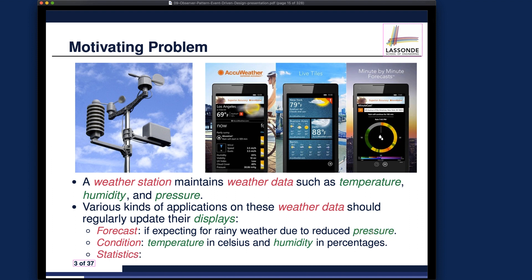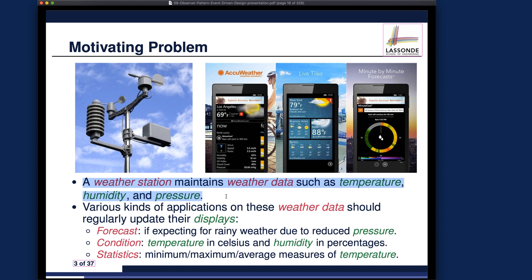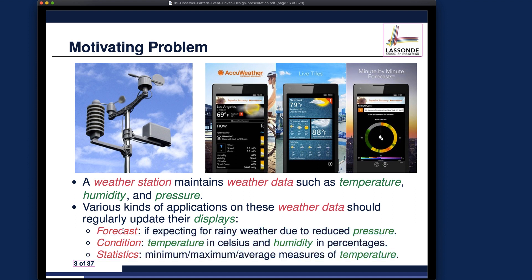The third app is a statistics app, which shows various statistics for temperature — for example, the minimum temperature so far, the maximum, and the running average. Before moving on to the first design attempt, make sure you understand the problem: a single weather station provides different measures, and each app selects specific ones — forecast uses pressure, condition uses temperature and humidity, and statistics uses temperature alone.